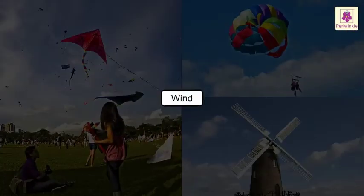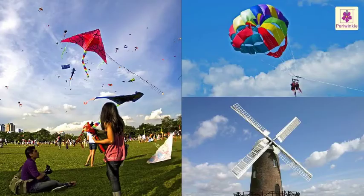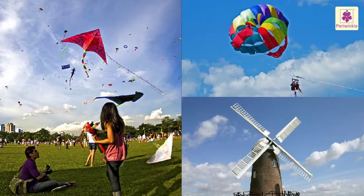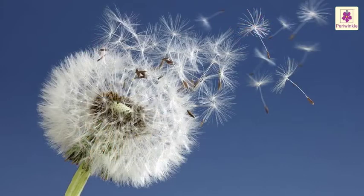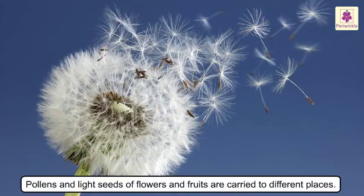Activities like kite flying and parachute sailing, and the working of the windmill are possible with the help of moving air. This moving air is called wind. Wind also helps in carrying pollens and light seeds of flowers and fruits to different places. This is how new plants grow, sometimes in far off places.